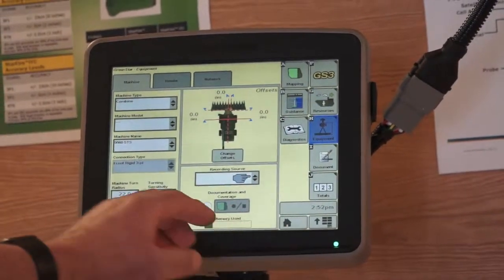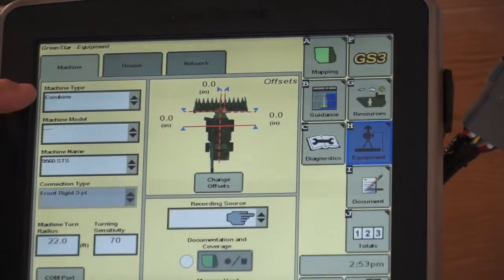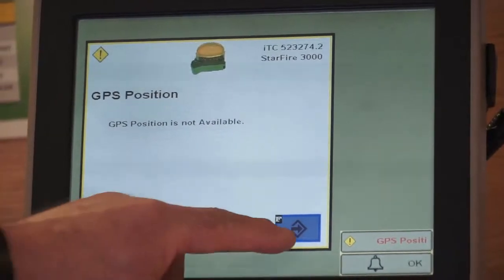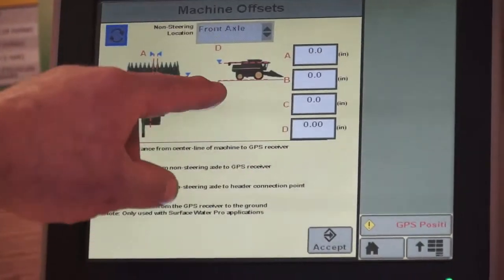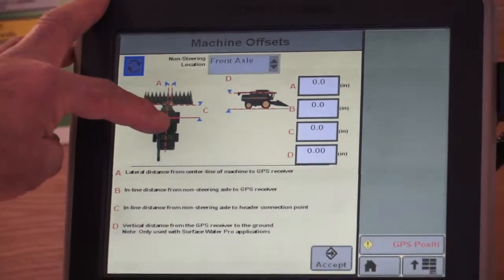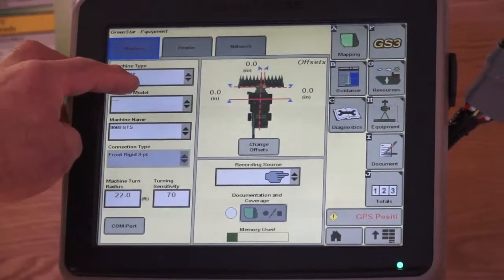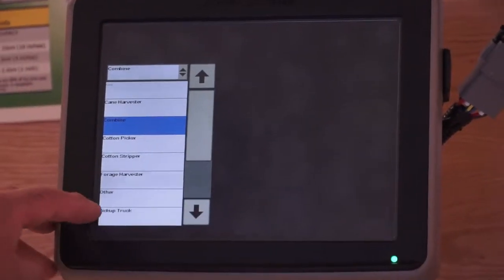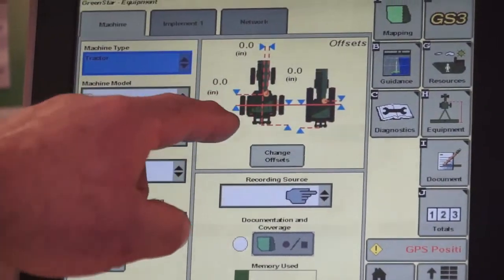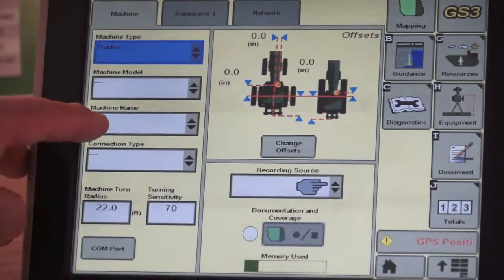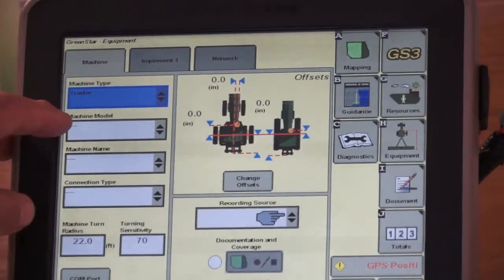The next tab down is equipment. Here again, for documentation to function properly, we need to have machine type, machine name, and all of this filled out correctly. And the offsets as well, which would be the measurements from position receiver to rear axle, rear axle to the front of the implement, so we know our recording point. If I change this from a combine to a tractor, obviously you can see my picture now changes. And my machine model and tractor machine name should be filled out properly for proper documentation. On our new equipment, this will happen automatically.